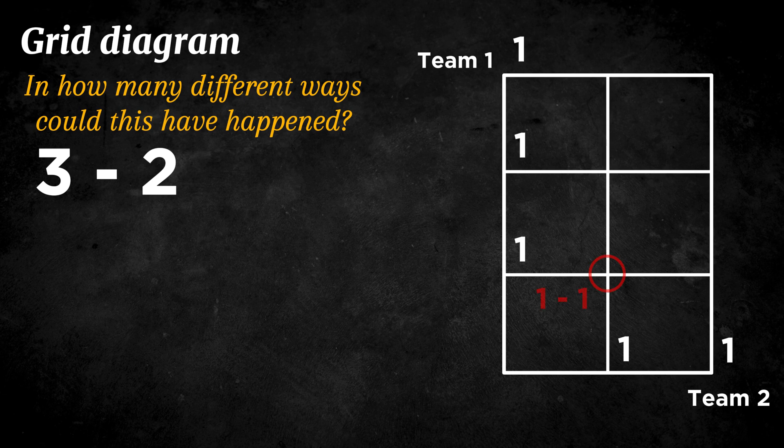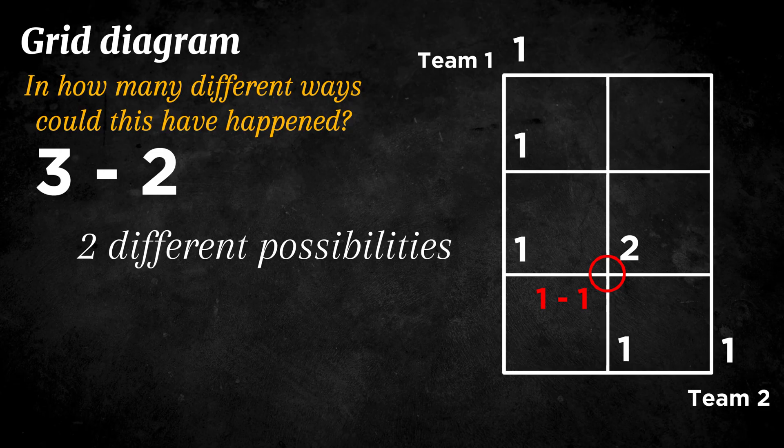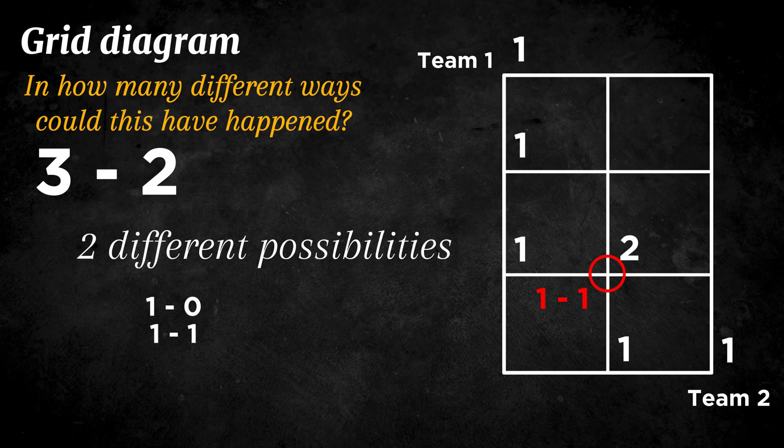But what about the score 1-1? In this case, there are two different possibilities. It could have been 1-0 first, followed by 1-1. Or it could have been 0-1 first, and then 1-1.